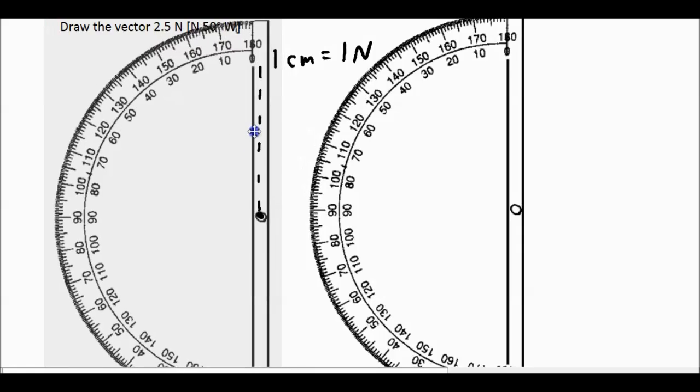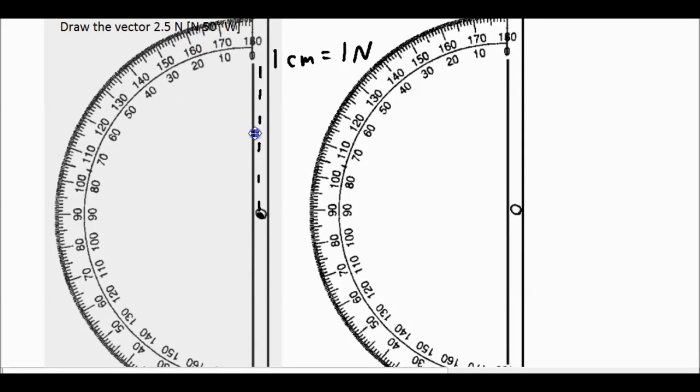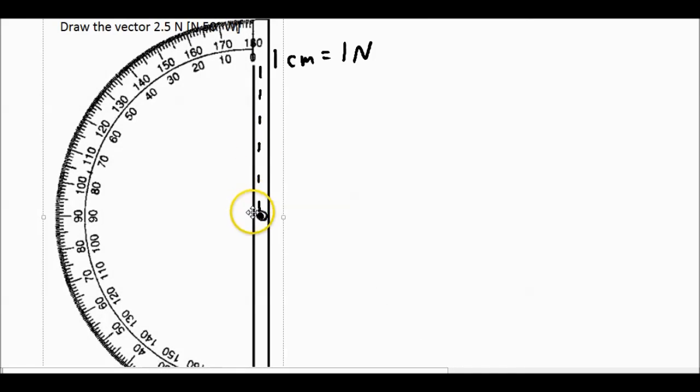You can see I'm going to take the circle of the protractor and line it up with the line that I drew, the reference line that I drew. So now we have here the circle, and it is lined up with our north line.